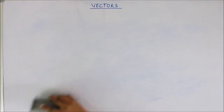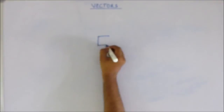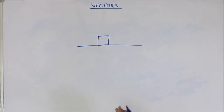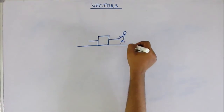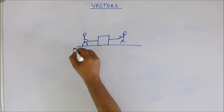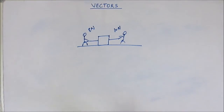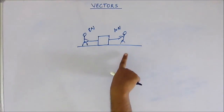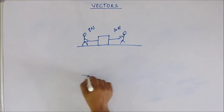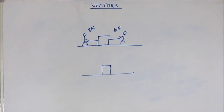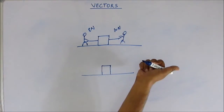Now if we have to represent vectors graphically — suppose there is a block kept on a smooth floor and two people are pulling it. There is a thread attached to the block and two people are pulling this block towards themselves. Suppose one person is applying 10 Newton of force and the other is applying 8 Newton of force; the block is likely to move towards the person applying more force. Now force is a vector quantity. Instead of drawing the people and threads, we just draw the body and represent the forces directly.